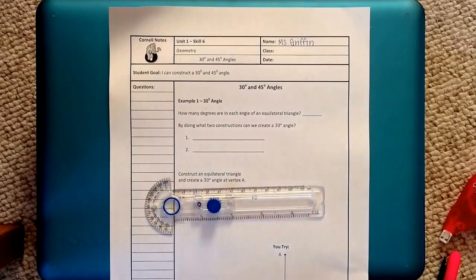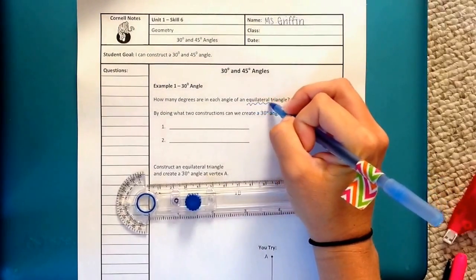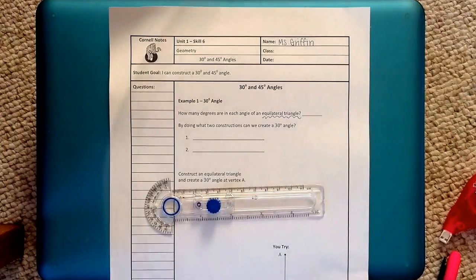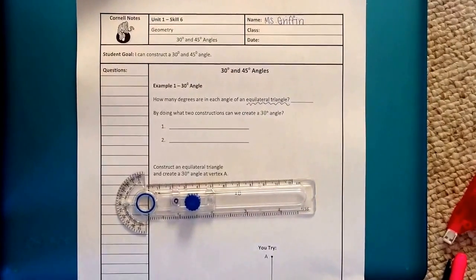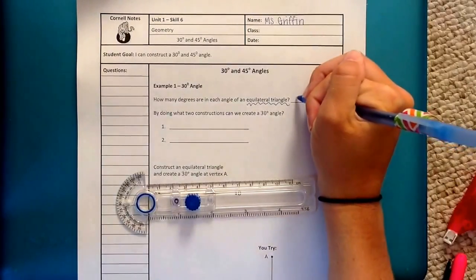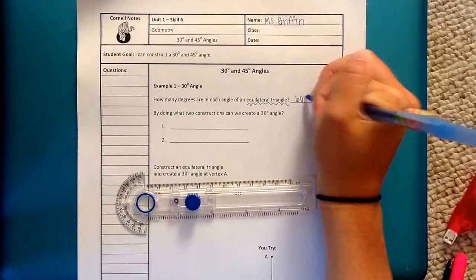Example 1 says 30 degree angle. How many degrees are in each angle of an equilateral triangle? Remember an equilateral triangle, we've talked about it before, we've actually constructed it twice now. Equilateral triangles have 3 congruent sides, 3 congruent angles, where each angle is 60 degrees.